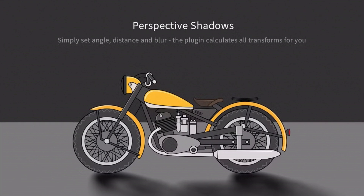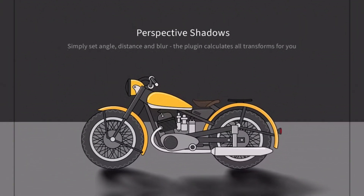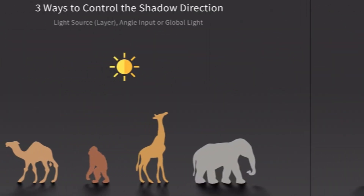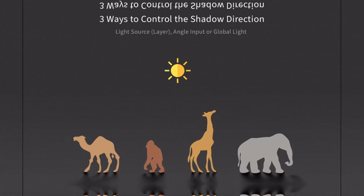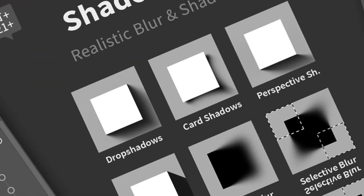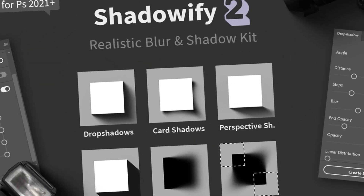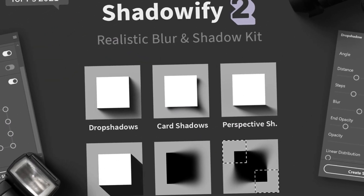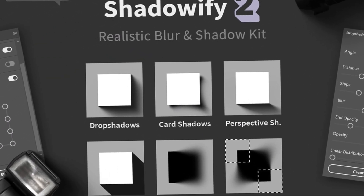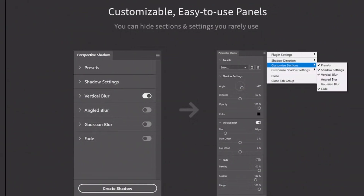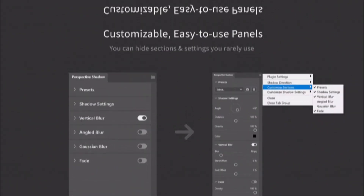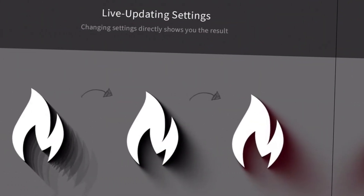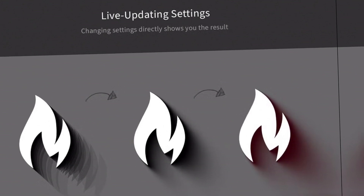Creating different types of shadows and realistic blur in Adobe Photoshop becomes as easy as never before with Shadowify 2 — the Blur and Shadow Plugin. This plugin works with Adobe Photoshop 2021 Plus. All you have to do is drag a few sliders, and the generated shadow will update according to your adjustments.